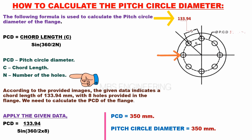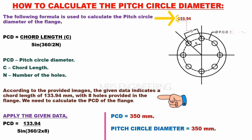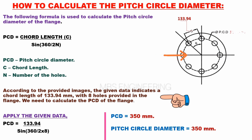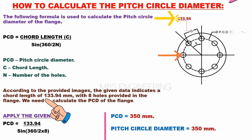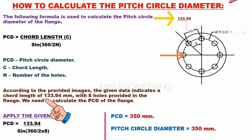C is the chord length of the flange. According to the provided images, the given data indicates a chord length of 133.94 mm with 8 holes provided in the flange. We need to calculate the PCD of the flange. The given data are: chord length is 133.94 mm and the number of holes is 8.